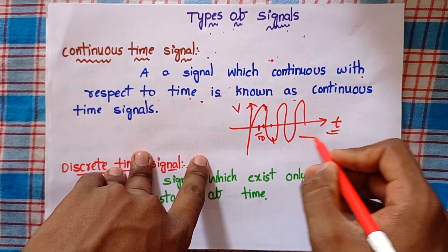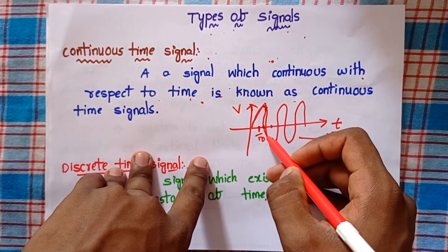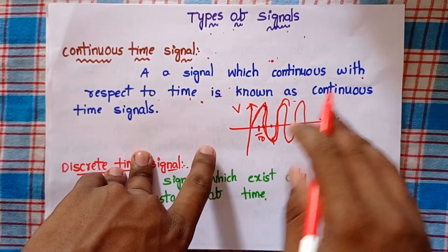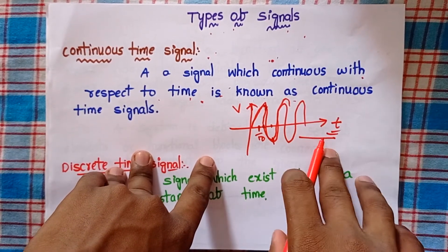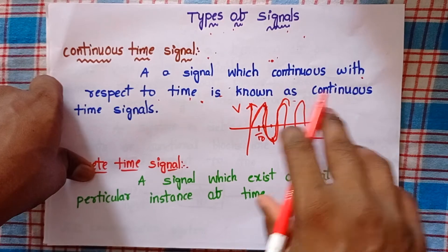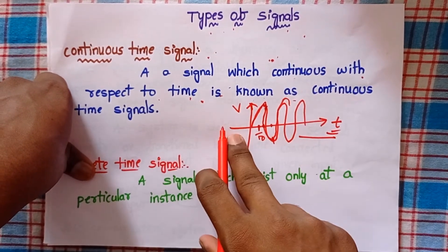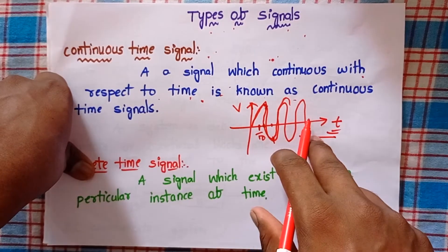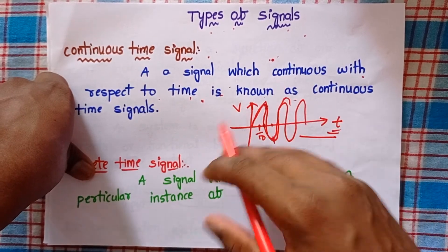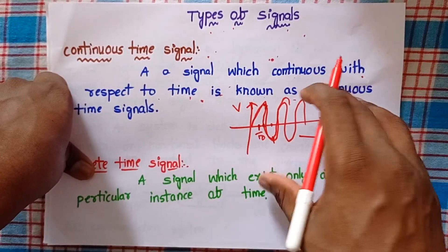The signal is continuously varying with respect to time. Here time increases and also the signal is varying. This is the continuous time signal. Based on the continuous time signals we have some systems also — those are nothing but continuous time systems. We will go to see those systems in the next class.